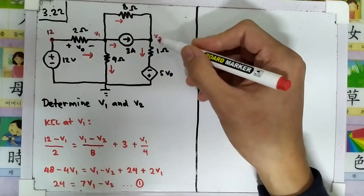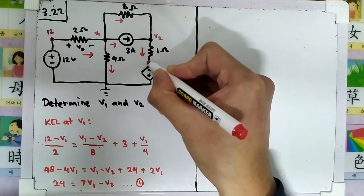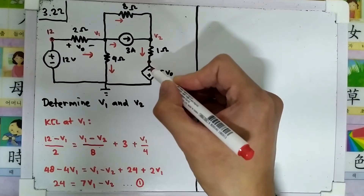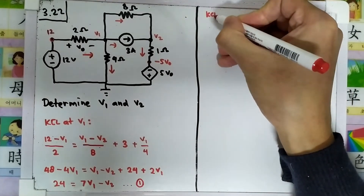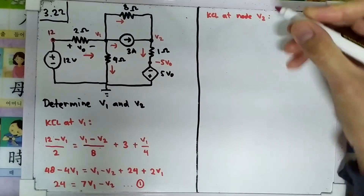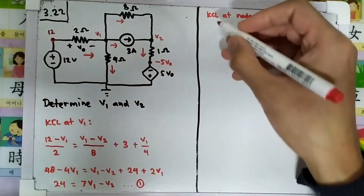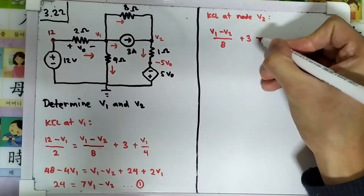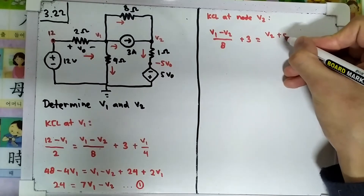Now we look at node v2. First I want to check this node — it is 5v0, where v0 is here. Since this is positive and this is negative, this has to be minus v0. Now we can do KCL at node v2. There are three currents: two go in and one goes out. The currents going in are (v1 minus v2) divided by 8, plus the current through the dependent source which gives plus 5v0.